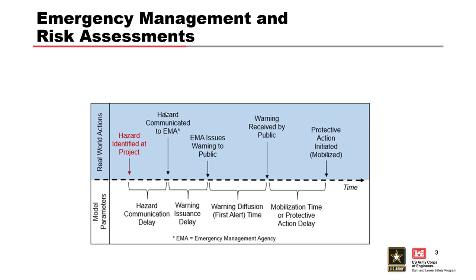Really quick overview since you've gone through all this stuff already this week. The warning evacuation timeline: a hazard is identified at a project, that hazard is communicated to emergency managers, who decide how to turn that information into action — communicating with the public, alerting the public. Warning diffusion: how long does it take to disseminate that first alert? And once the warning is received, how long does it take people to take a protective action?